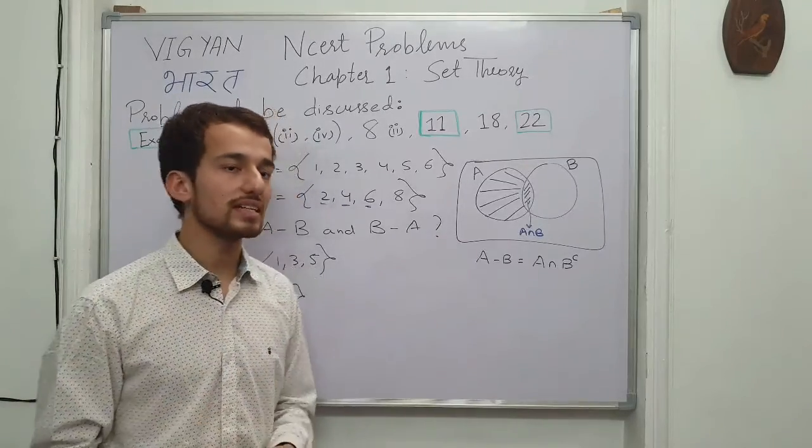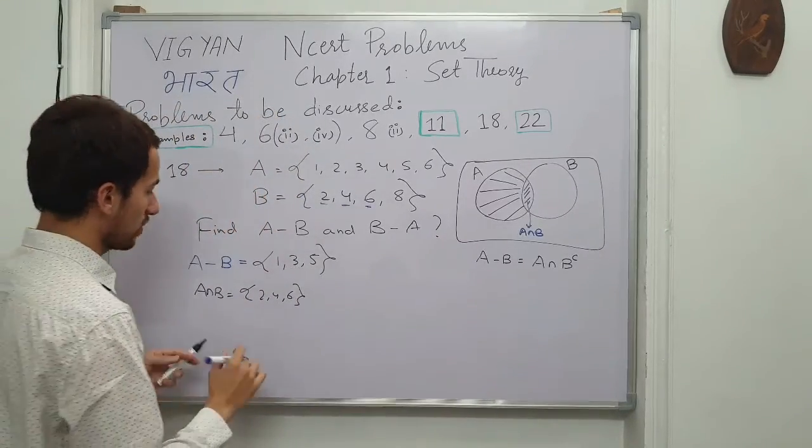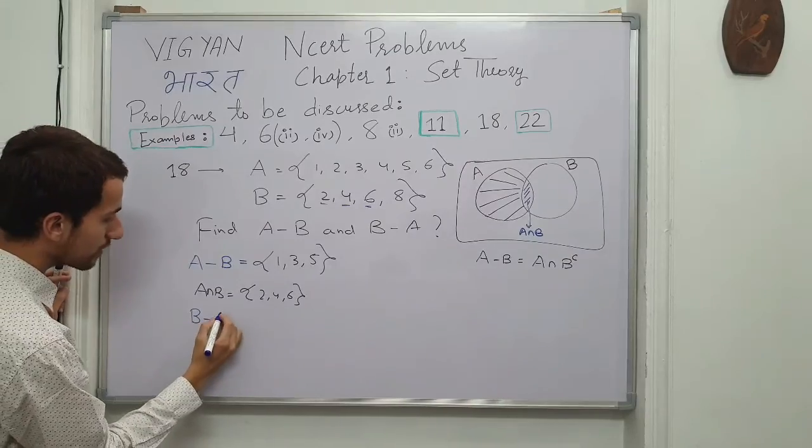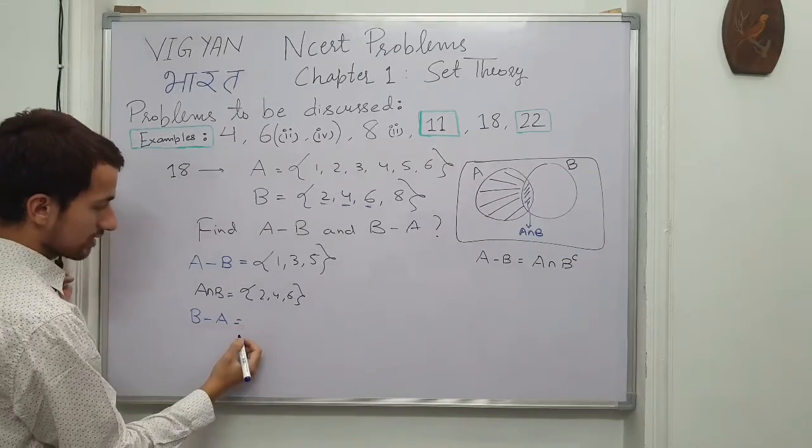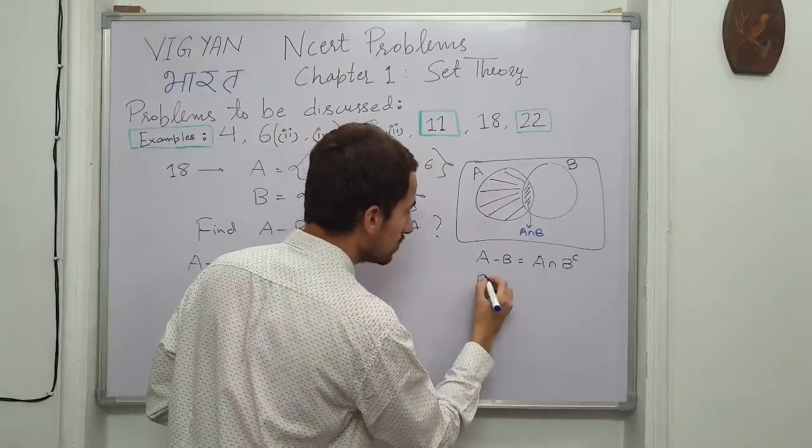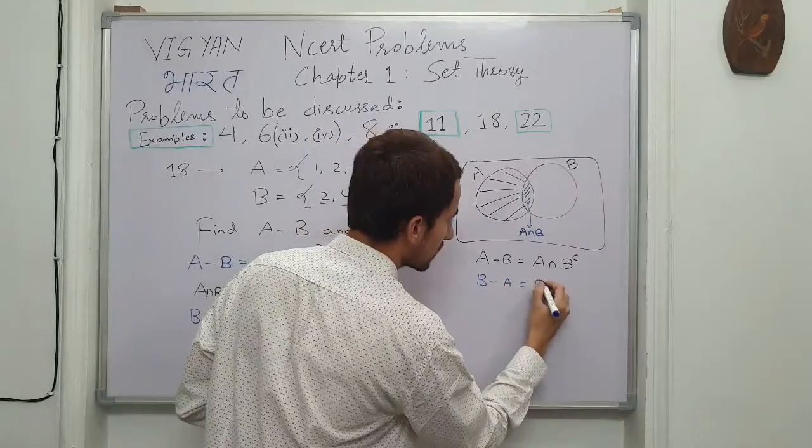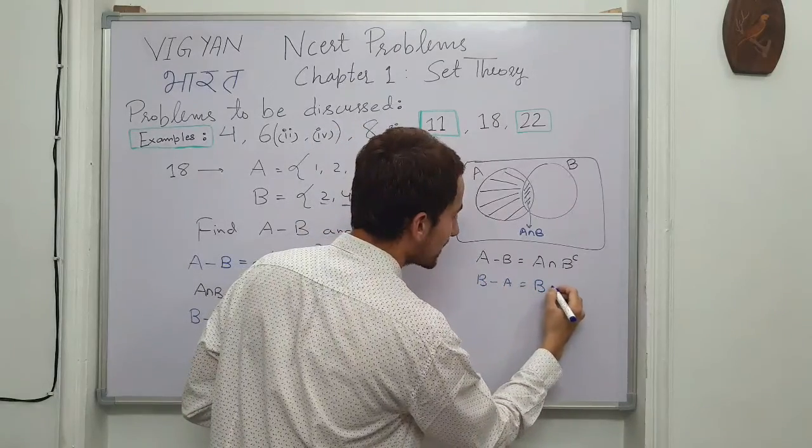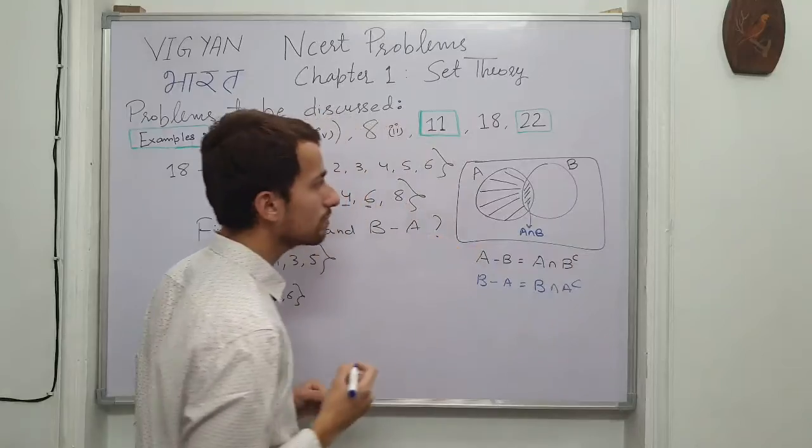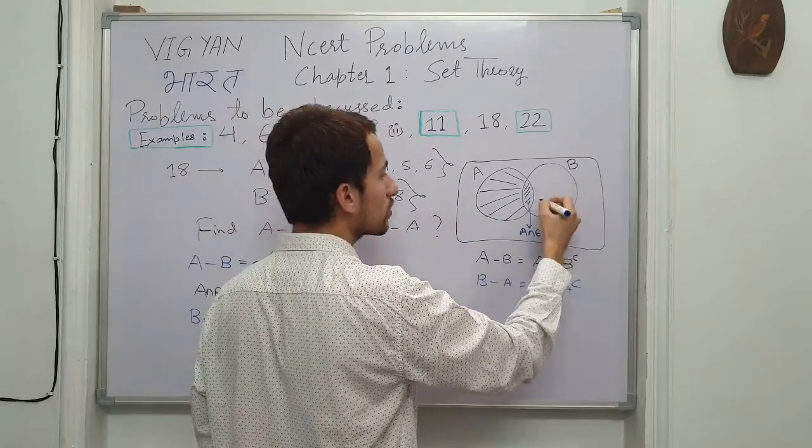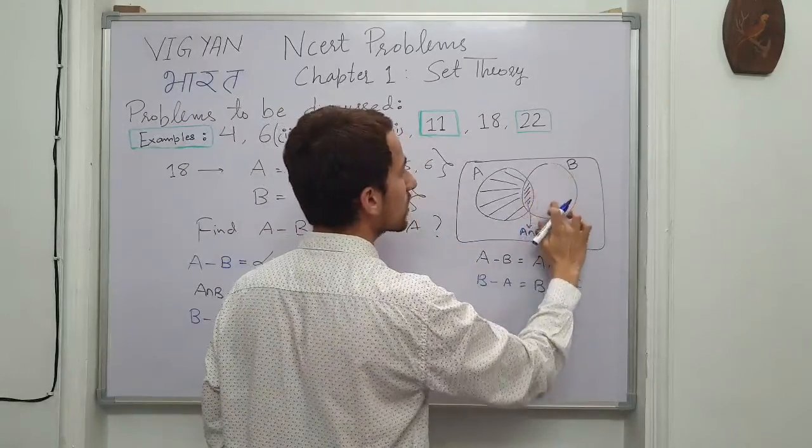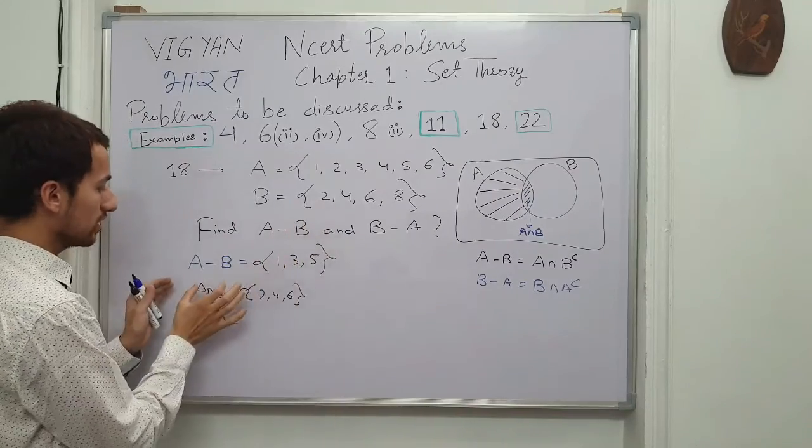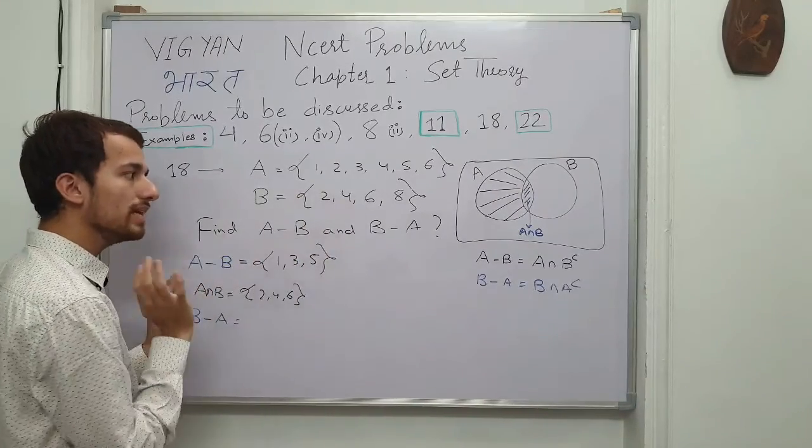On similar lines you can find the set B-A which is quite easy now because we have to basically use the same definition. The definition now reduces in this case to B-intersection A complement simply. So only this much we are trying to ask now, this unshaded part. So B-A reduces to subtract the common elements from the set B.